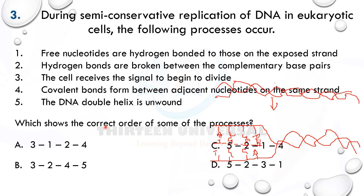Once free nucleotides are bonded to the template by hydrogen bonds, they are then linked together by forming covalent phosphodiester bonds. So the complete order is: five (DNA unwinds), two (hydrogen bonds between strands broken), one (free nucleotides form hydrogen bonds with template), four (covalent bonds formed between adjacent nucleotides on the new strand). The answer is C.